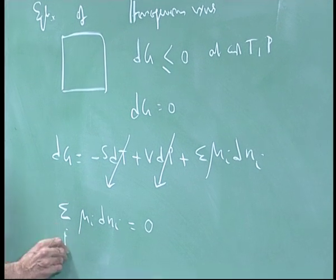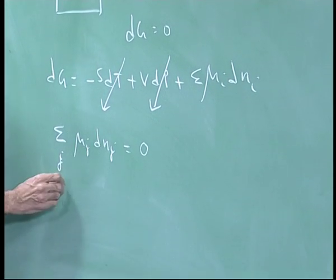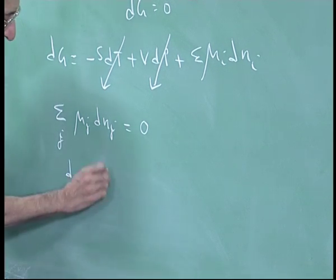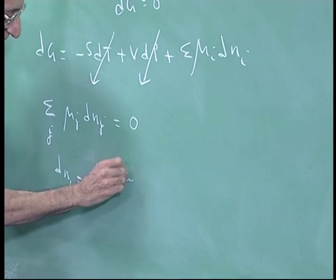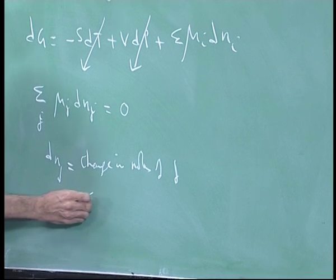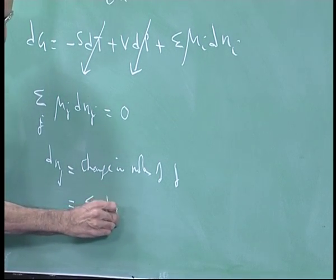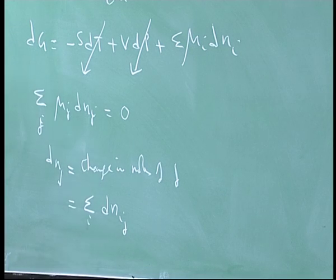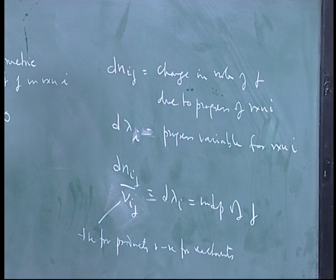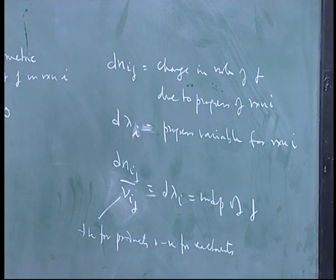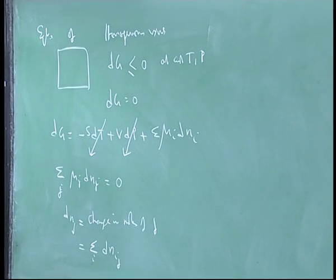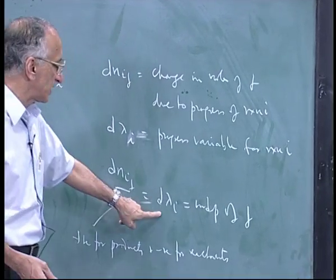Making the index J, dN_J is the total change in the number of moles of J, equal to the sum over i of dN_IJ. We defined dN_IJ as the change in moles of J due to progress of reaction i. If I sum over all reactions, I get the total change in moles of J. And dN_IJ equals nu_IJ times dLambda_I.